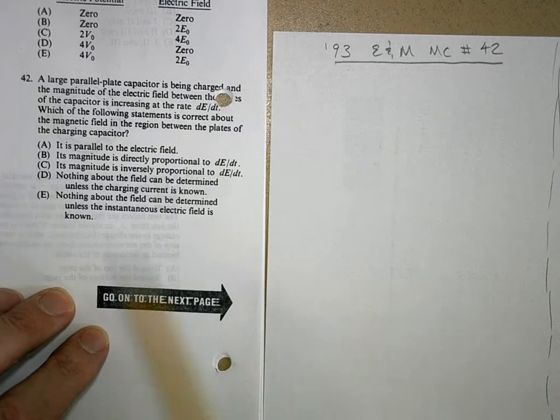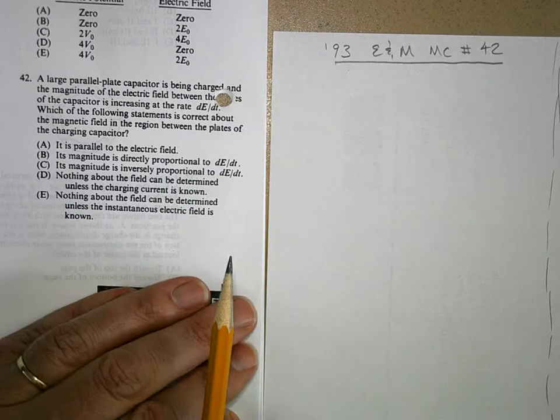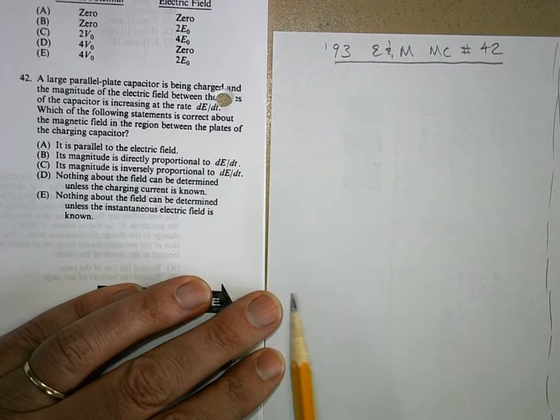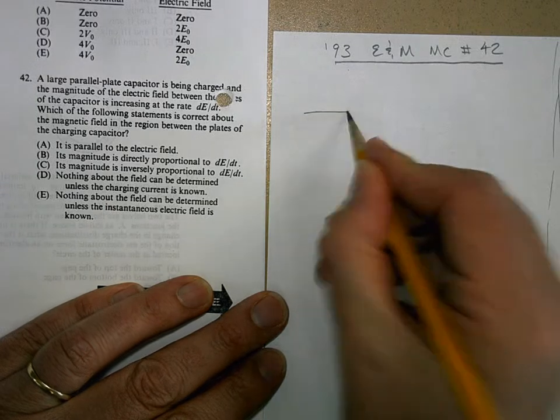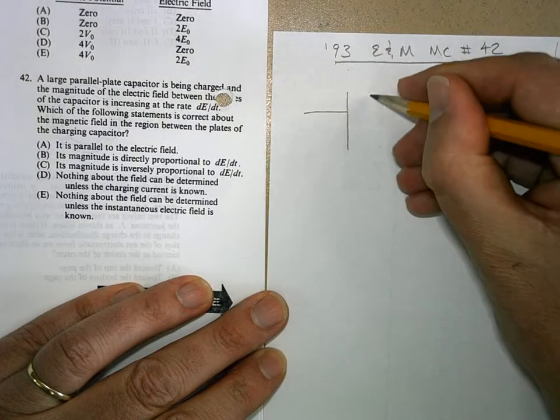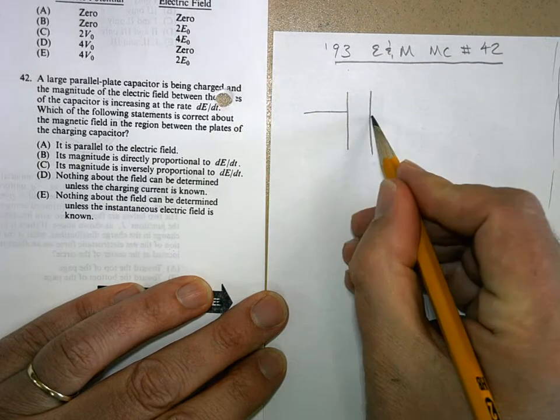Here are your options right here. We'll go over those options in a minute, but let's visualize what's happening. Let's draw a capacitor. Here's your plates.